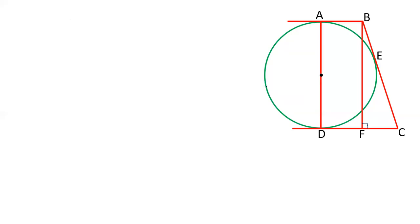Before moving ahead, let us prove something. There is a center of the circle, and if we join the point of contact, that radius will be perpendicular to the tangent. So OA is perpendicular to AB, and OD is perpendicular to CD. Now AB and CD are parallel lines and perpendiculars from the same points are drawn, so OA and OD form a straight line — AD is a straight line.